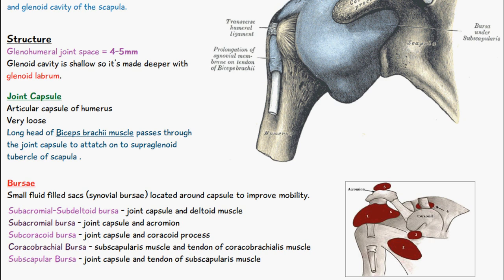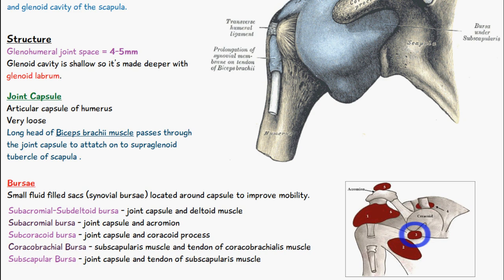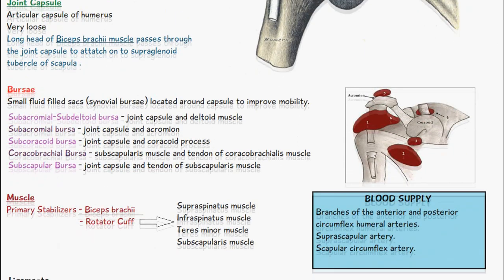There are five different types of bursae within the shoulder joint. There's the subacromial subdeltoid bursa, which is between the joint capsule and the deltoid muscle; the subacromial bursa, between the joint capsule and the acromion; the subcoracoid bursa, between the joint capsule and the coracoid process; the coracobrachial bursa, between the subscapularis muscle and the tendon of the coracobrachialis muscle; and the subscapular bursa, between the joint capsule and the tendon of the subscapularis muscle.